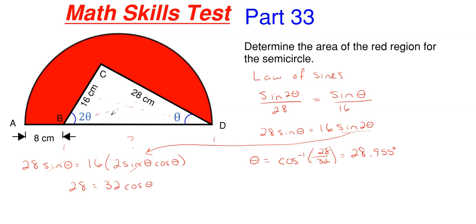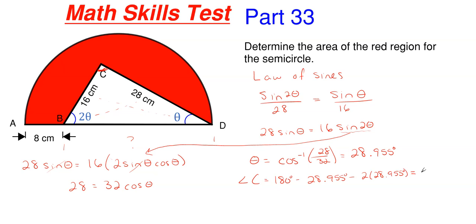Now that I know theta, I can find 2θ, but the whole goal was to get the angle at C. The angle at C is 180 degrees minus θ minus 2θ, which is 180° minus 28.955° minus 2 × 28.955°. That's essentially subtracting 3 times theta from 180°, giving an angle at C of approximately 93.135 degrees.